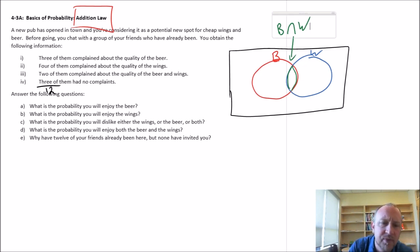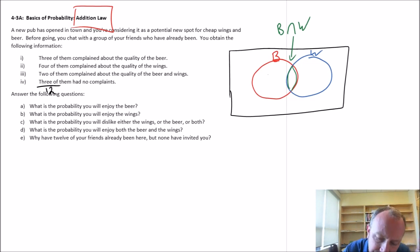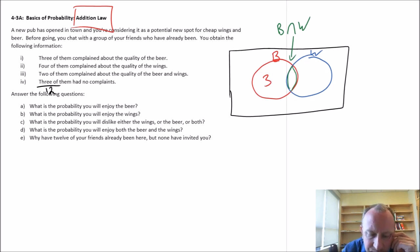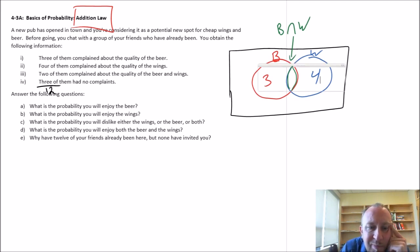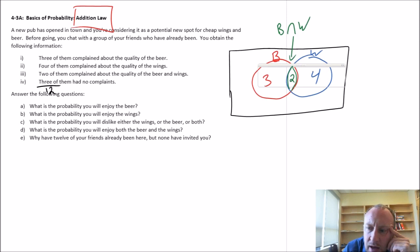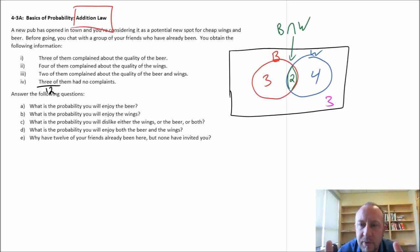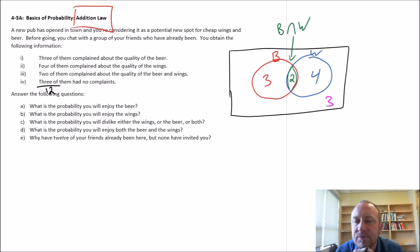Now let's put our numbers in. People who disliked the beer and only the beer — there are three of them. People who disliked the wings and only the wings — there are four of them. People who complained about both the beer and the wings — there are two of them in the intersection. And finally, three people had no complaints whatsoever, so they sit outside both circles. That accounts for all 12 friends.